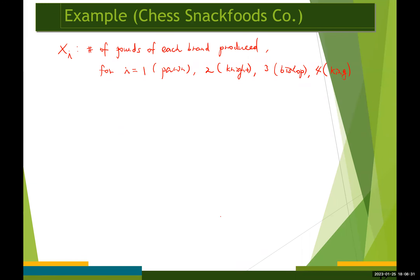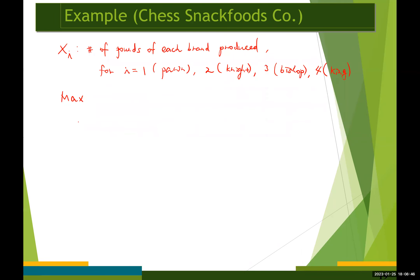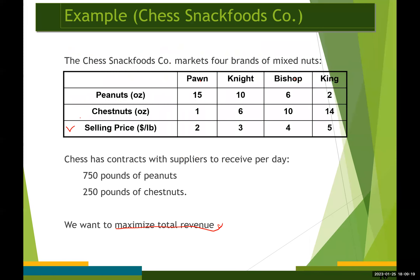Our objective function is to maximize the total revenue. Using the selling prices from the bottom row of the table, the objective is: maximize 2x1 + 3x2 + 4x3 + 5x4. For the constraints, we use the first two rows of the table to ensure the pounds of peanuts and chestnuts used do not exceed supply. That gives us two constraints — one for peanuts and one for chestnuts.